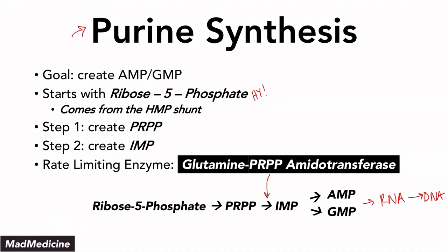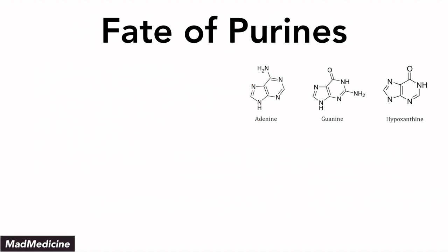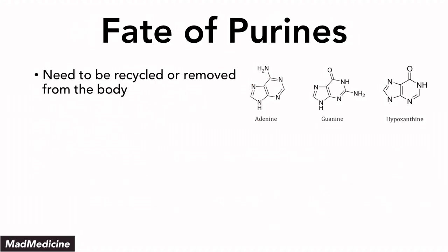That's the basic basis of purine synthesis in a very simplified way. When it comes to purines after they have been synthesized and after they have been used up, there are essentially several fates that purines can go through. They can be recycled or they can be removed. They need to be either recycled or removed from the body because you can't have them hanging around for too long. If there is excessive recycling or removing happening, they can be excreted as uric acid, and excessive amounts of uric acid can thus lead to gout.